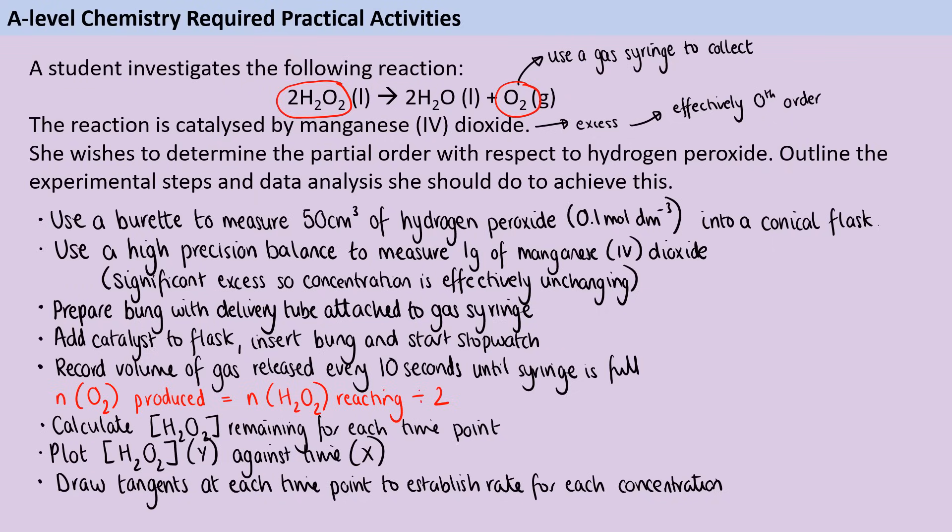So now you've got two options in terms of analysis. One is that you just do it numerically. So you say, if the concentration of hydrogen peroxide doesn't affect the rate at all, then it's zeroth order. If as the concentration halves, the rate halves, it's first order. If as the concentration halves, the rate quarters, then it's second order. The problem with doing it this way is that it relies on the fact that at some point during that reaction, you're going to have a concentration that was half of the starting concentration. And that's going to have happened at one of those time points that you've measured it.